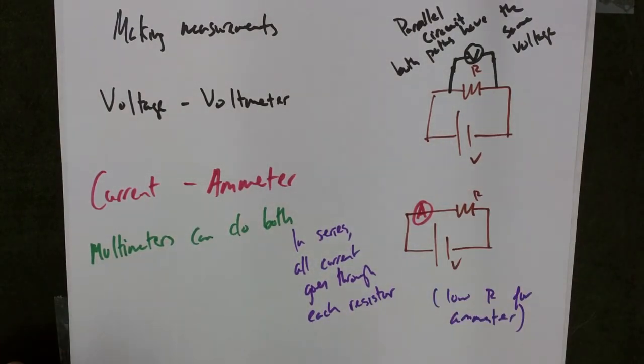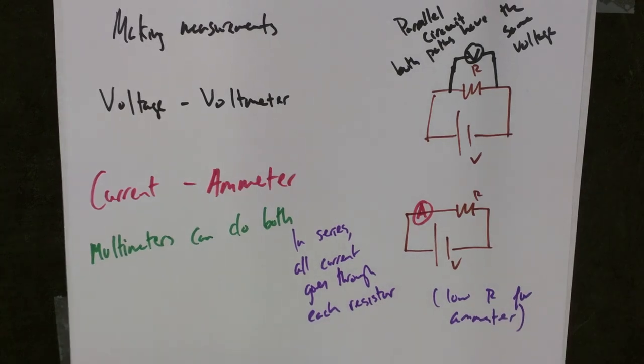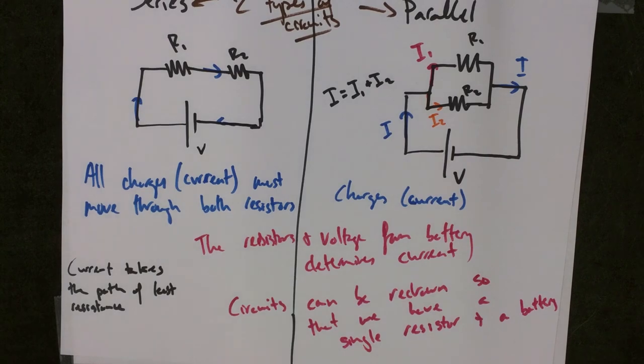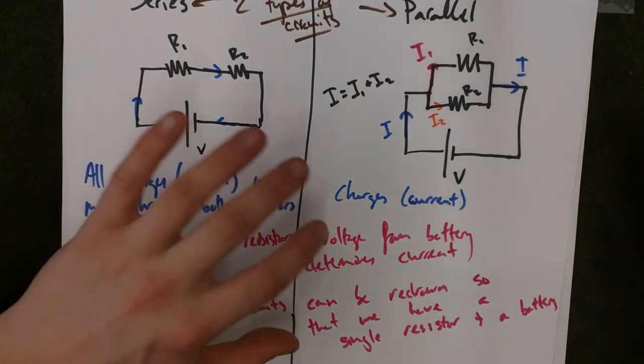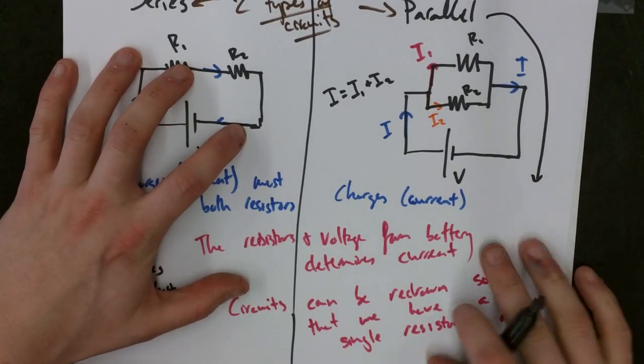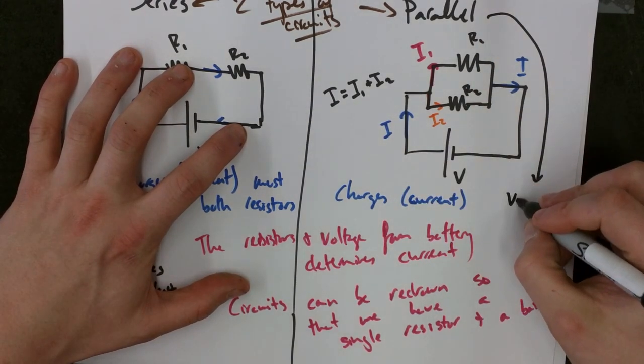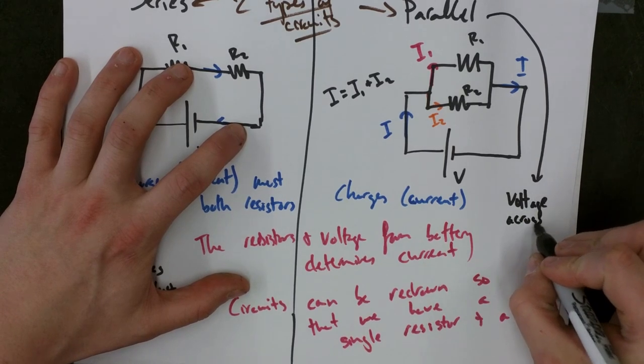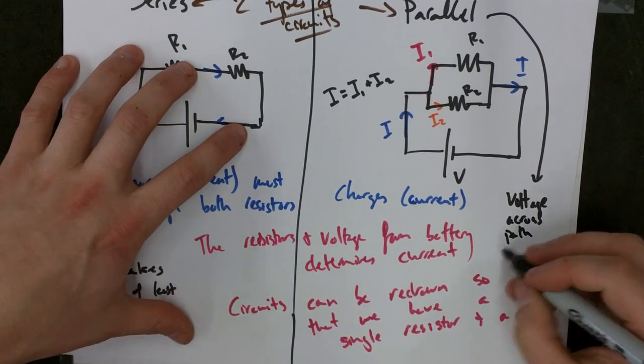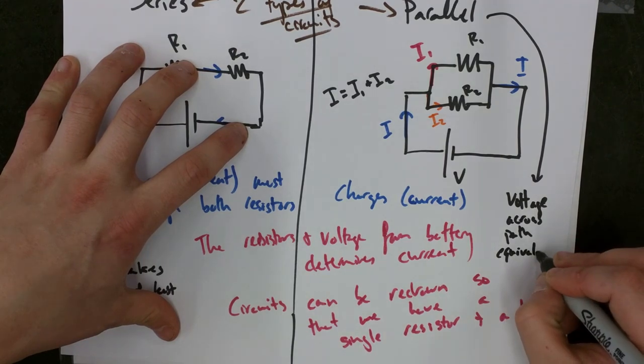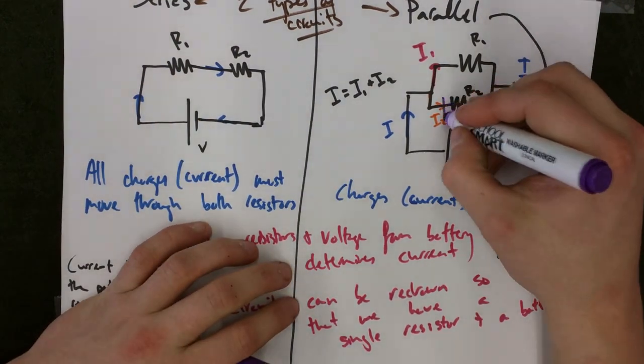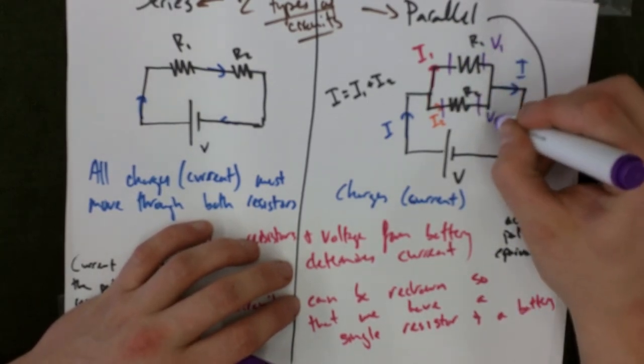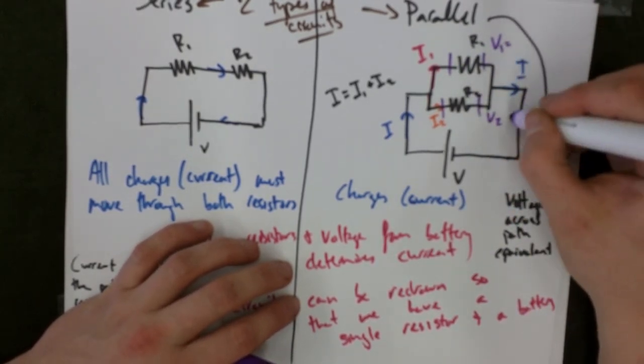So just to reiterate on parallel circuits and series circuits. The parallel circuits. In these circuits, we have voltage across paths equivalent. So the voltage across this path to this path is the same. V1, V2, and they're equal to each other.